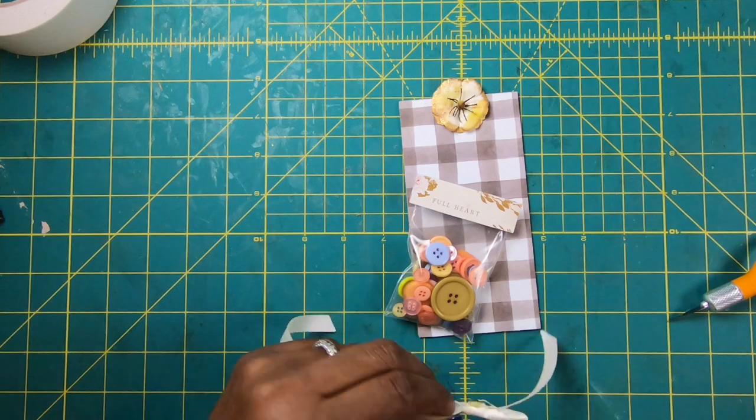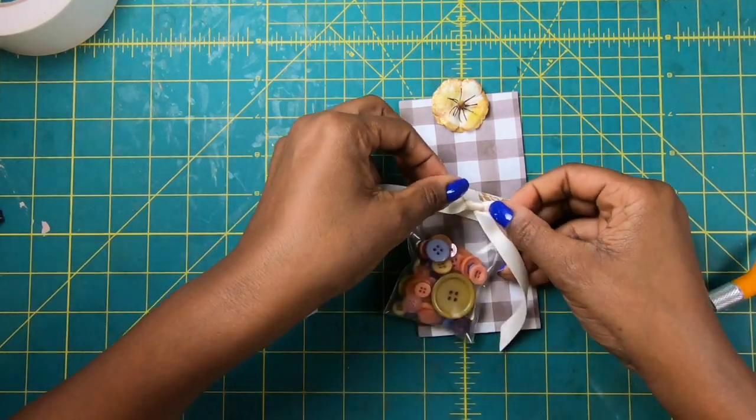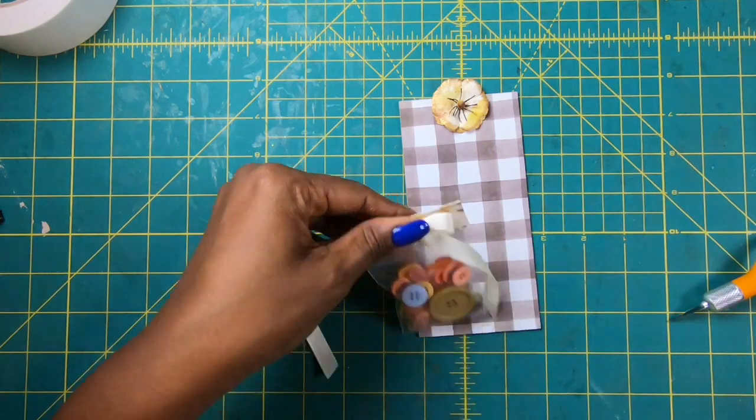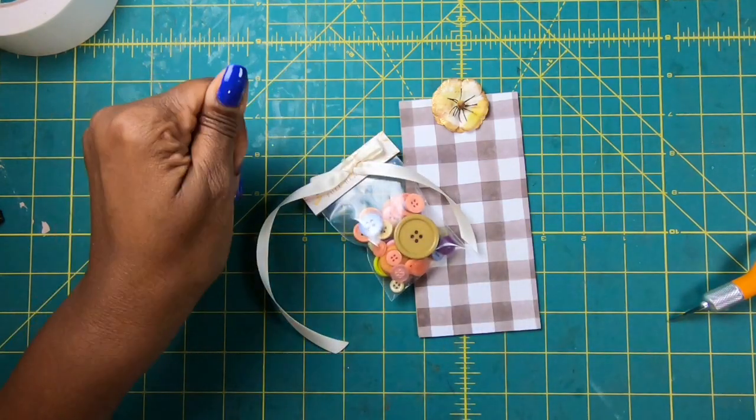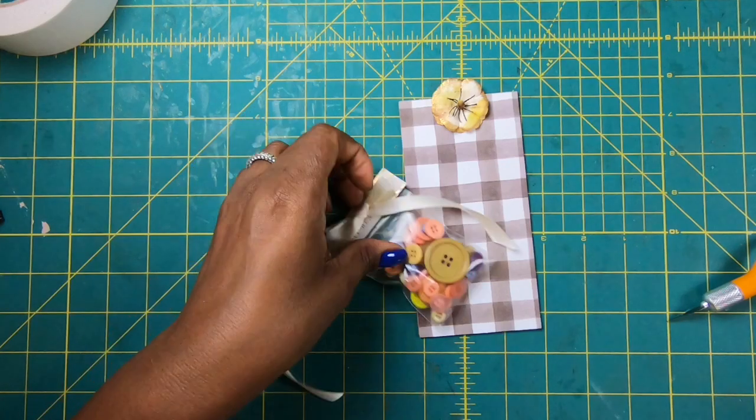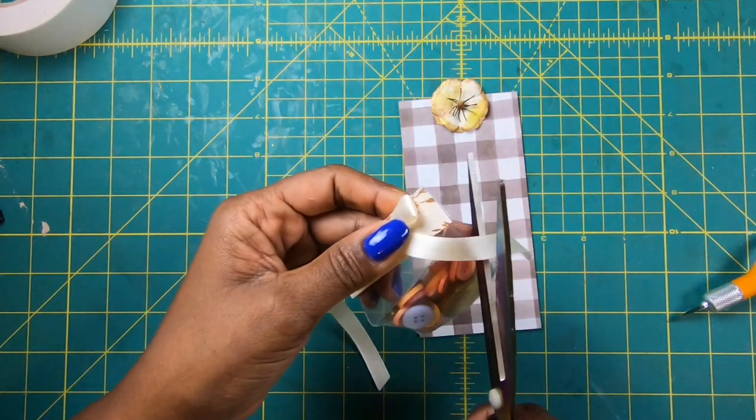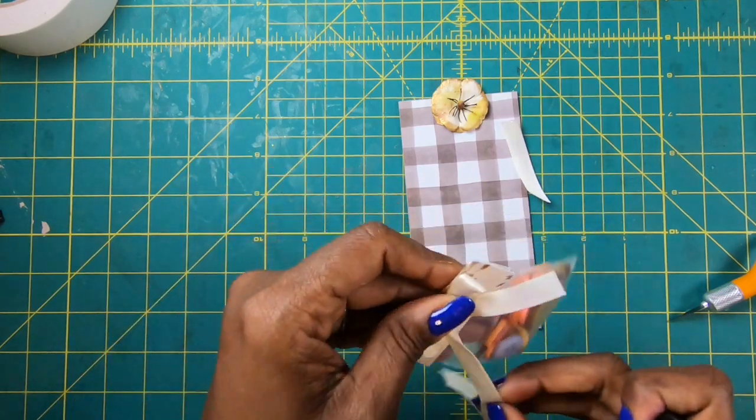And I'm going to place it right up here, so I want it on the topper part. Then I'm going to come back with my scissors and I am going to just trim off some of this ribbon because I don't need all of that ribbon on there.